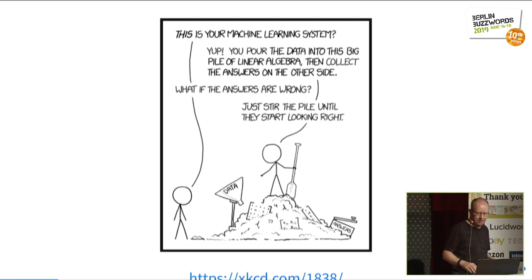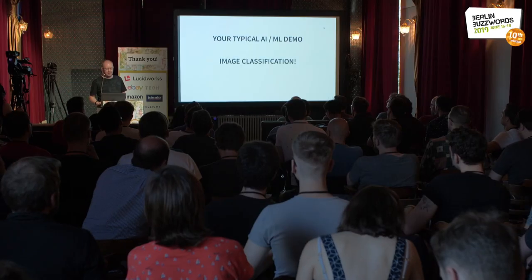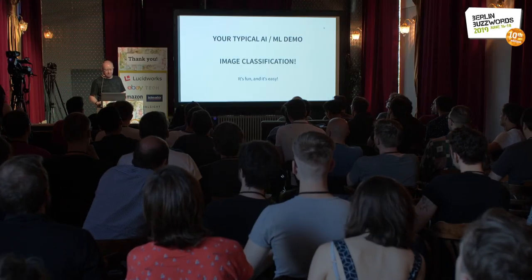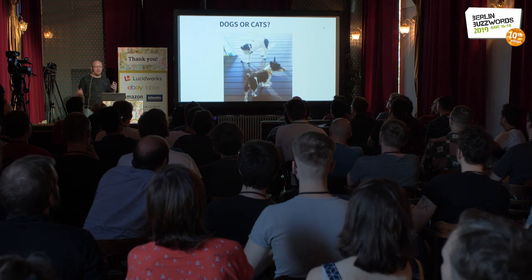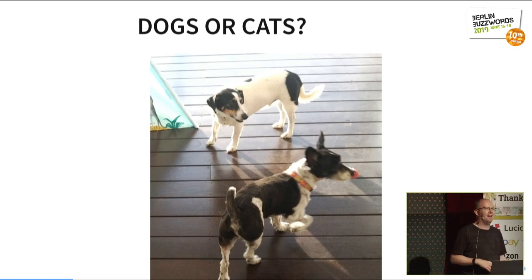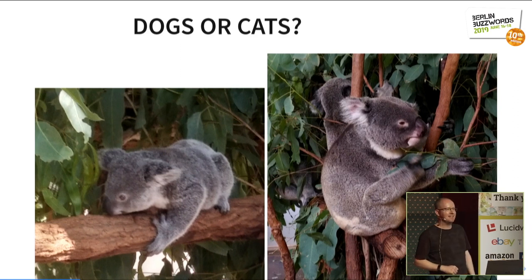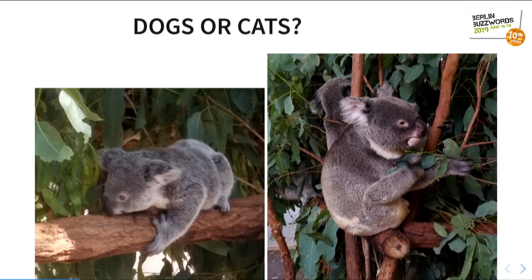In your typical AI and ML demo, you have images — images are cool and make for good demos. Let's do a little bit of audience participation, labelling some data. Is this dogs or cats? Dogs. Okay. What about this one? The AI is only going to be as good as the questions and the training data. So if you give an AI that's trained to recognise dogs and cats a picture of a koala, it's not going to give you the right answer.